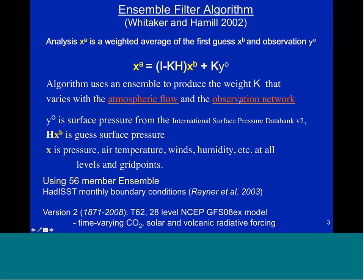If you're in a flow that's rapidly developing a low, we also give relatively more weight to the observations. We use a 56-member ensemble, and we do need monthly boundary conditions. Those come from HadISST for the sea surface temperature and sea ice distribution. To generate our first guess XB — that ensemble of 56 first guesses — we use an NCEP model, the NCEP Global Forecast System. This was a 2008 experimental version; its key features included time-varying carbon dioxide concentration and the ability to include solar and volcanic radiative forcing.